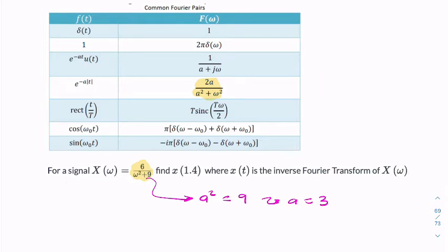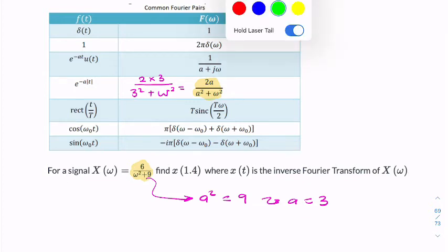So now I can rewrite this as 2 times 3 over 3 squared plus omega squared. And that resembles that, so we don't need any scaling.